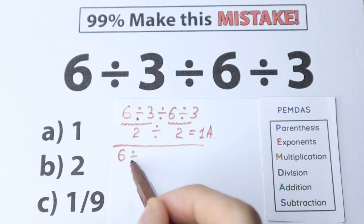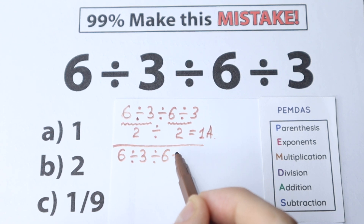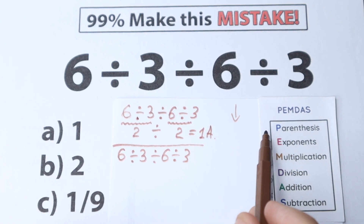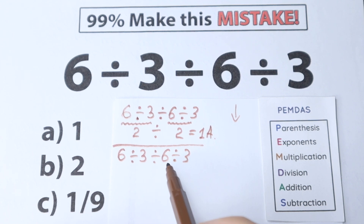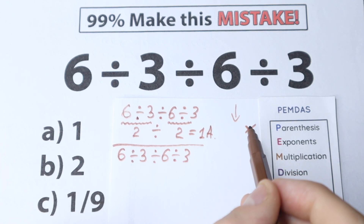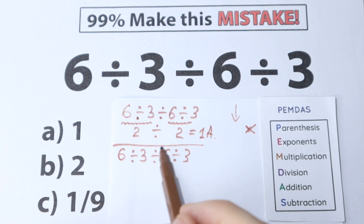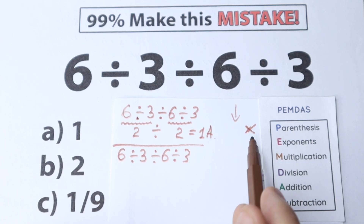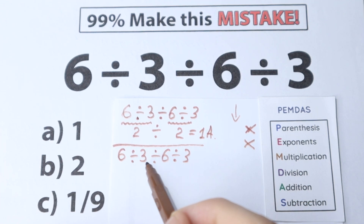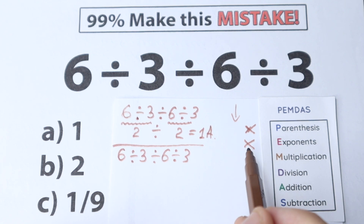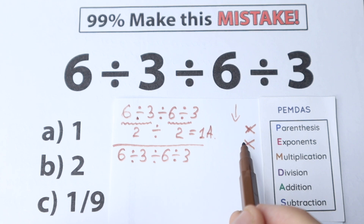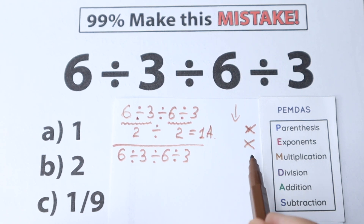So we have 6 divided by 3, divided by 6, and divided by 3. In PEMDAS, the first step is Parentheses. We scan for parentheses — in our case we don't have any, so we skip that step. The next step is Exponents. We don't see any powers here either, so we skip that step as well. Not having parentheses or exponents makes things simpler for us.